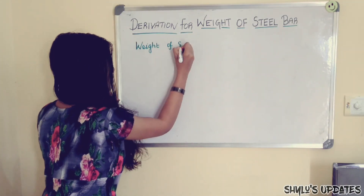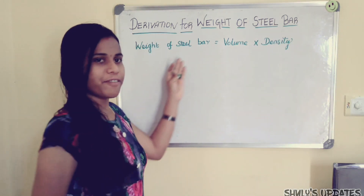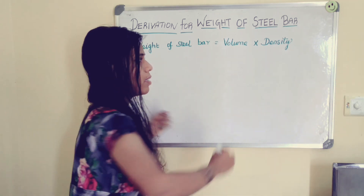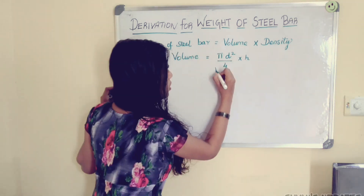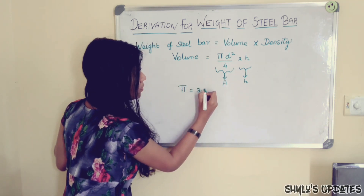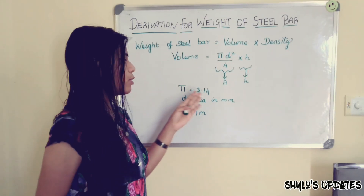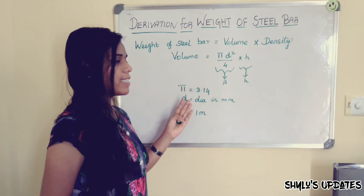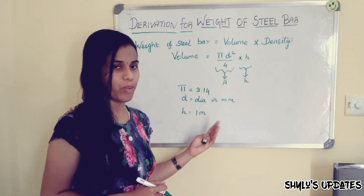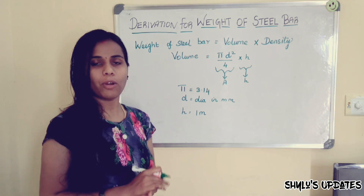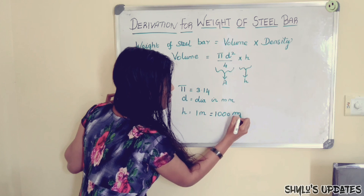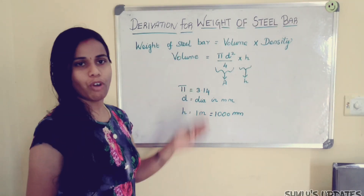The first step is: weight of steel bar is equal to volume into density. So first we have to solve the volume, which is area into height. Here pi is equal to 3.14, D is the diameter, and for height I have taken 1 meter. We have to convert 1 meter into millimeters, so 1 meter equals 1000 mm.